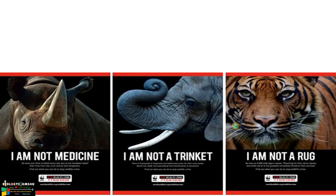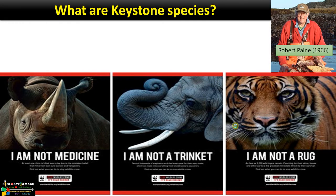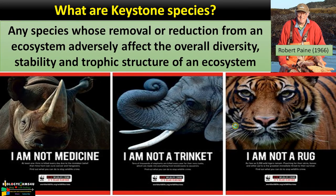These are all keystone species — rhino, African elephant, tiger. The concept of keystone species was put forward by Robert Paine, a famous American ecologist, during his studies on rocky intertidal ecosystems, where he identified starfish as a keystone species. Keystone species can be defined as any species whose removal or reduction from an ecosystem adversely affects the overall diversity, stability, and trophic structure of that ecosystem.